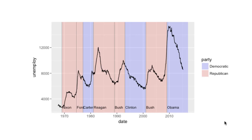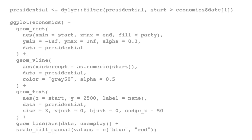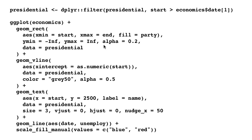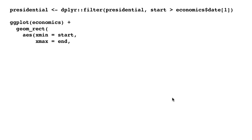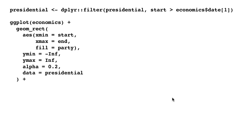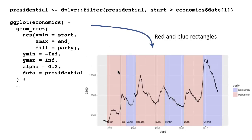The color of the rectangle is determined by party — fill equals party. Within the presidential data frame, for every president you also have the party affiliation. So fill equals party is what produces the colored rectangles. That's what happened in this particular layer — it plotted the red and the blue rectangles.